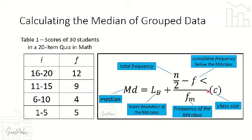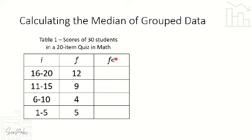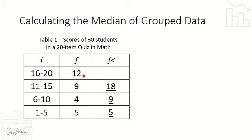Before computing, we need to add an F less than column — the cumulative frequency less than column — to our table. Start from the bottom with the lowest frequency, which is 5. Copy that as 5, then add the succeeding frequencies: 5 plus 4 equals 9, 9 plus 9 equals 18, 18 plus 12 equals 30.